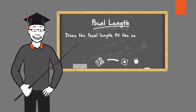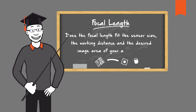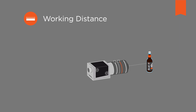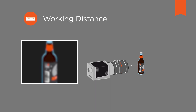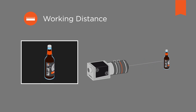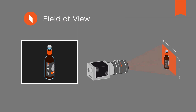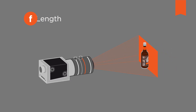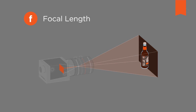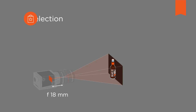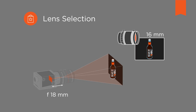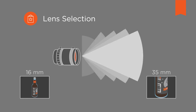Does the focal length fit the sensor size, the working distance and the desired image area of your application? Each lens has an optimal working distance. If the lens is positioned at this distance from the object to be captured or the scene to be observed, the maximum image sharpness is achieved. The field of view, the working distance and the sensor size yield the focal length F of the lens to be selected, given in millimeter. For industrial cameras, fixed focal length lenses are preferred, as they are mechanically more stable. If the calculated value for the focal length doesn't match any available lens, it is recommended to choose the next smaller focal length, which results in a slightly larger field of view.